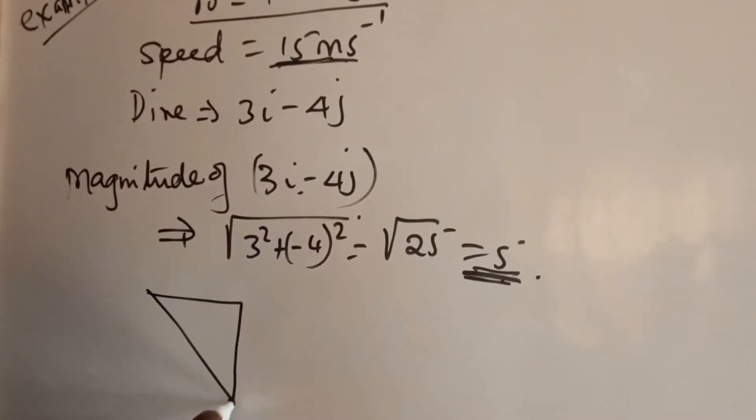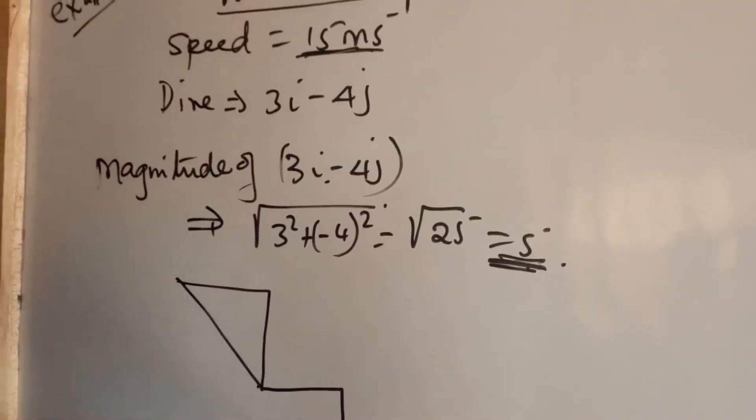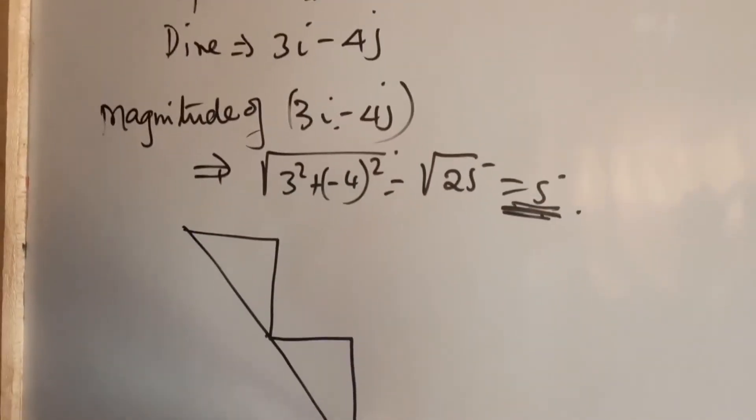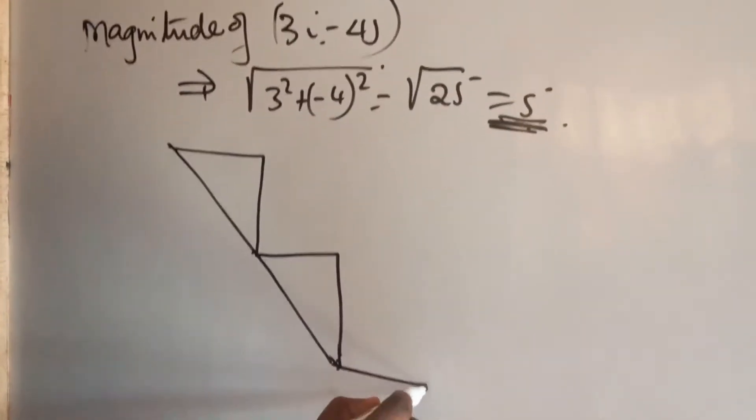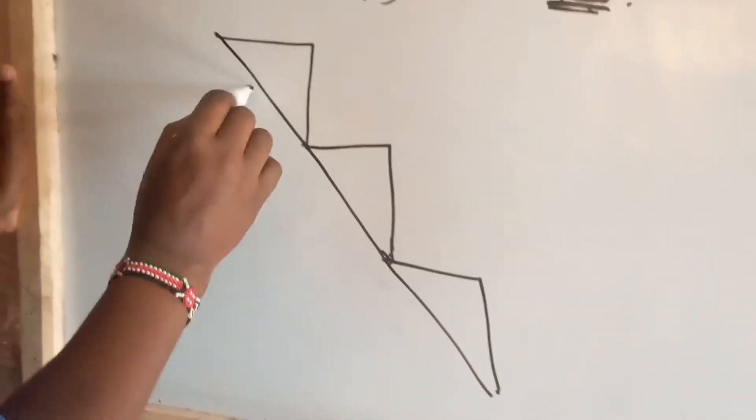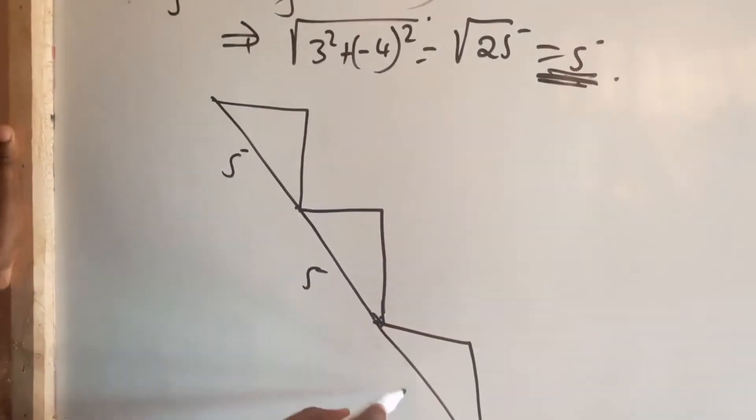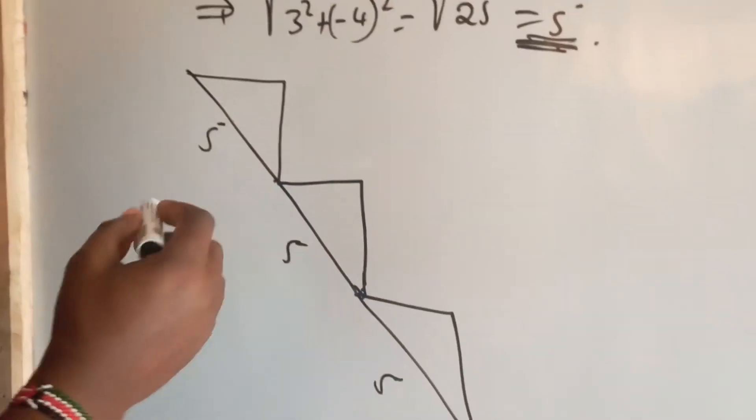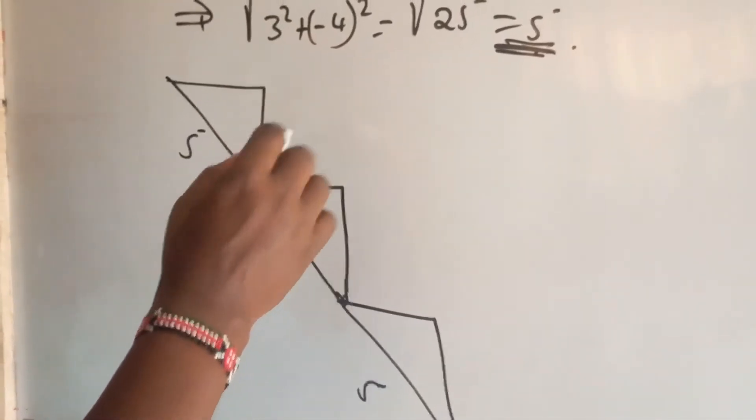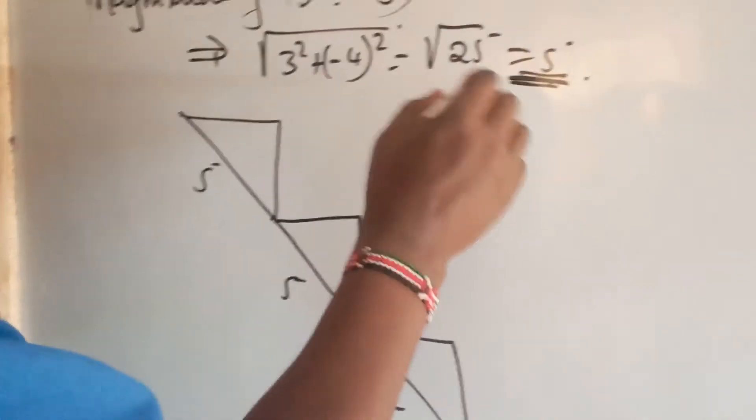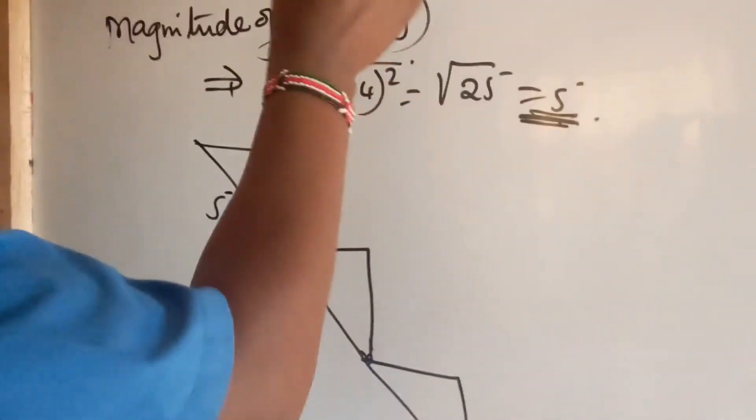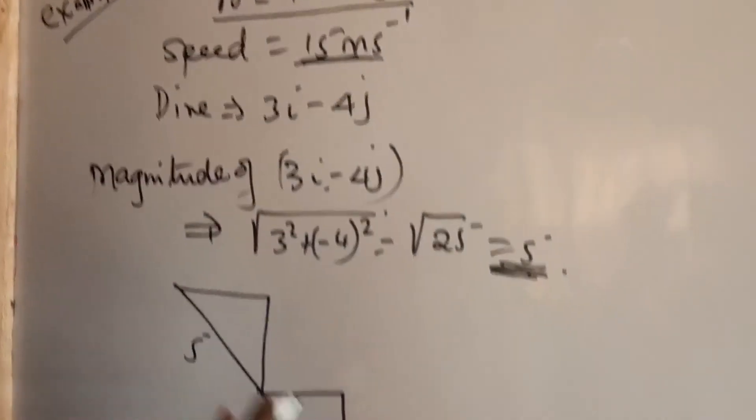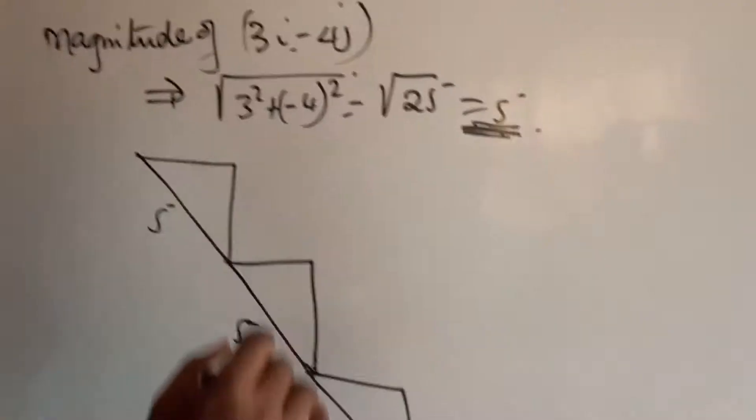Then we have to have another set of vectors: 3i minus 4j, and the third one 3i minus 4j, such that this is 5, this is 5, and this is 5. When you combine 5 times 3, you realize that we have the speed of 15 meters per second.